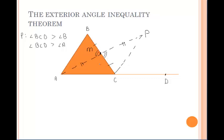We know that segment MB is congruent to segment MC because of the midpoint, and then we can get some vertical angles congruent. Therefore, we know that triangles ABM and PCM are congruent by side-angle-side, and that means that angle 1 is congruent to angle B by CPCTC.